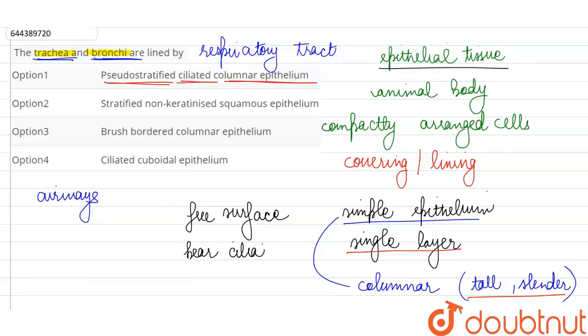Columnar epithelium, columnar because the cells are tall and slender. Ciliated we are calling it because the free surface bears cilia, and the cilia are there because our airways need to clean the air which is coming through inspiration.